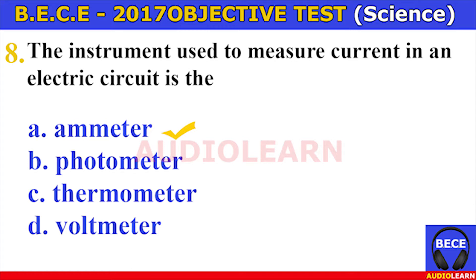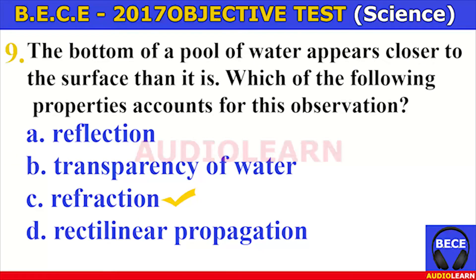Number eight. The instrument used to measure current in an electric circuit is the A. Ammeter, B. Photometer, C. Thermometer, D. Voltmeter. The answer is A. Ammeter. The instrument used to measure current in an electric circuit is the ammeter.